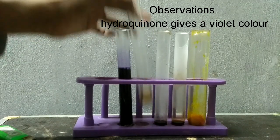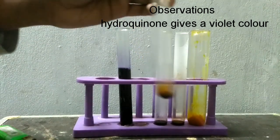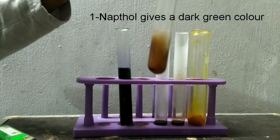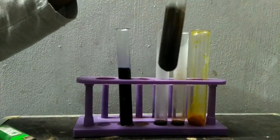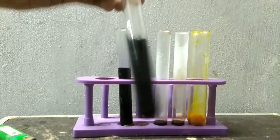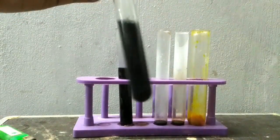Now we will add sodium hydroxide to the alpha naphthol one. We get a dark green color.